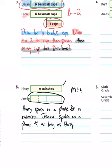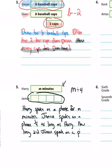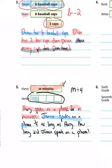And then we just need a question: how long did Janice speak on a phone? Breaking it down one more time — three sentences. First, unknown amount: Harry M minutes, so Harry spoke on a phone for M minutes. Then we noticed Janice had one-fourth of that — bar split into fourths — so Janice spoke on a phone one-fourth as long as Harry. Last, the question: how long did Janice speak on a phone?